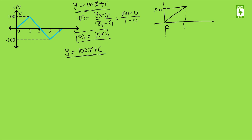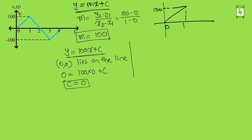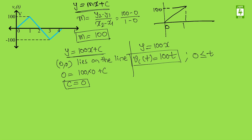In order to find the y-intercept, the point (0, 0) lies on the line. So we put the values: y = 100x + c, and c comes out to be 0. The complete equation is y = 100x, where y is the voltage axis and x is the time axis. This is the final equation, valid between 0 to 1.